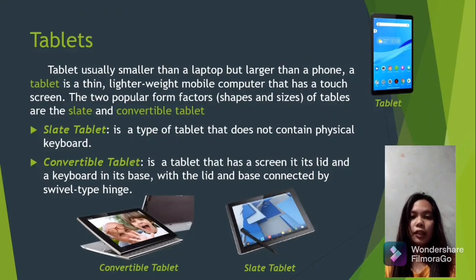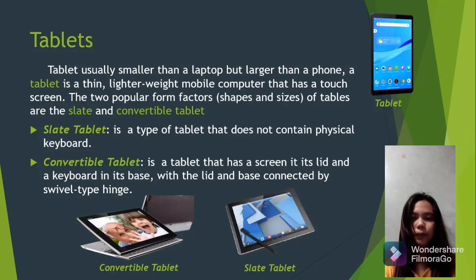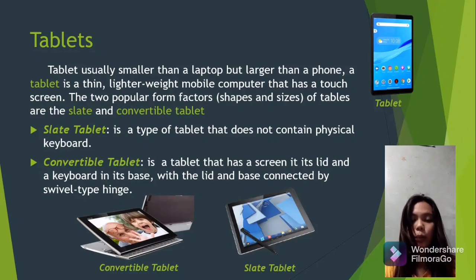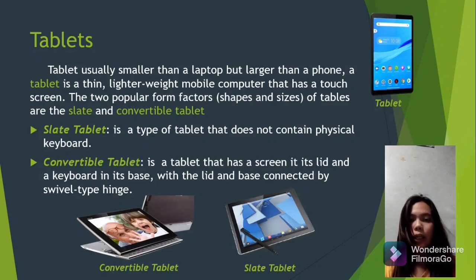A tablet is usually smaller than a laptop but larger than a phone — a thin, lightweight mobile computer with a touch screen. There are two popular forms of tablets. The first is a slate tablet, which does not contain a physical keyboard, meaning you can only swipe and touch the screen. The second type has a screen in its lid and a keyboard in its base, so you can both touch the screen and type on the keyboard.